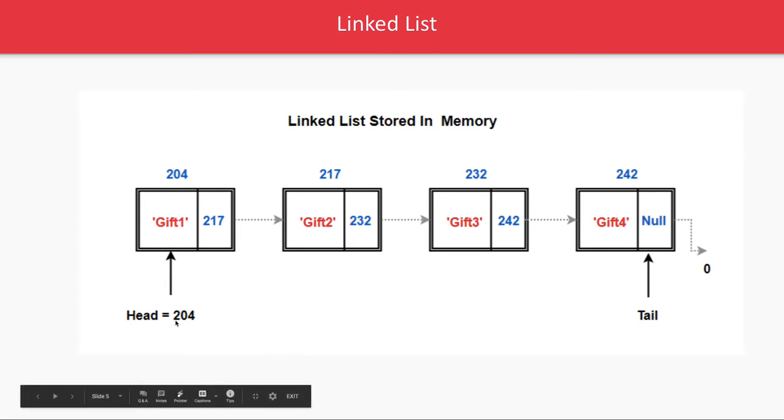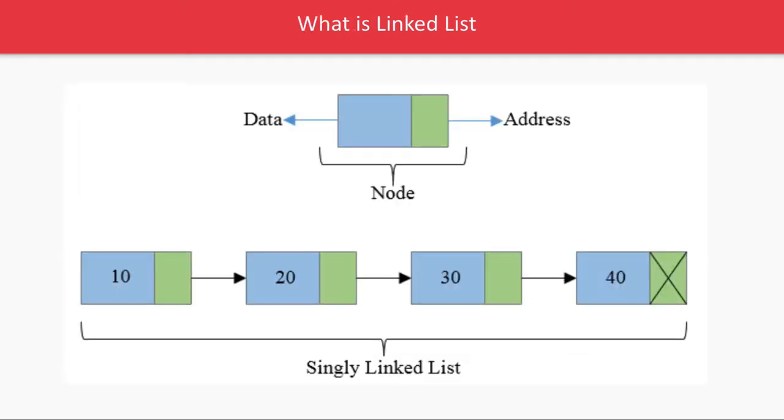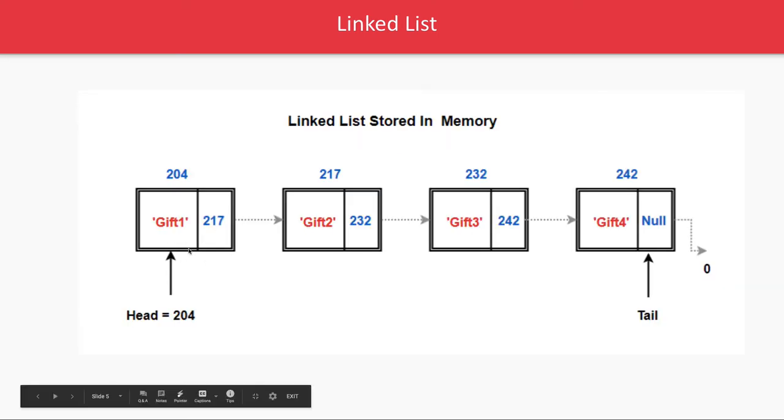There are few things head, tail, a link, next, these are some terminologies of a linked list. Every data, you can consider this is a data structure which we are calling as a node, a single data structure.